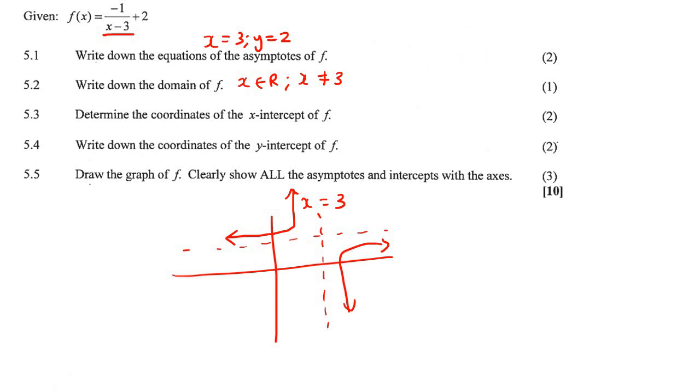And then if you prefer to use interval notation, you could say x is an element from negative infinity up to three, or from three up to infinity. Something like that. Let me explain.